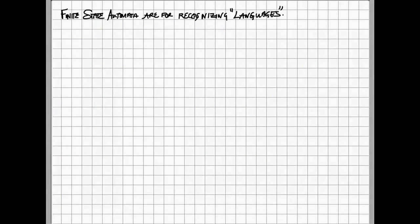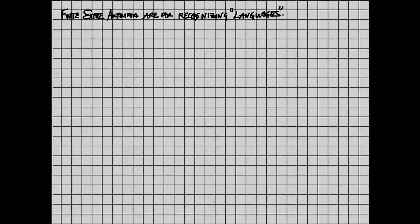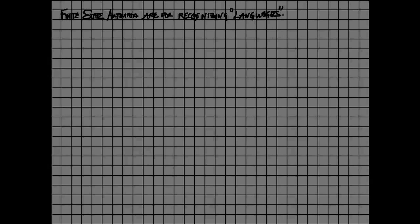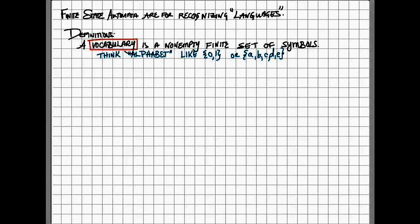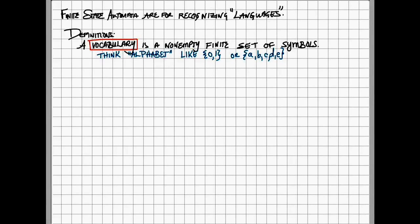Now, finite state automata are, we're told in the book that they're used for recognizing languages. I don't think they mean like Chinese. Instead, they're thinking about mathematical languages. And we're going to have to define a few things along the way.